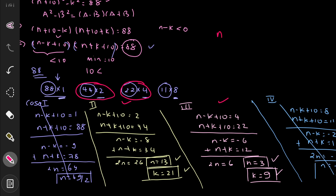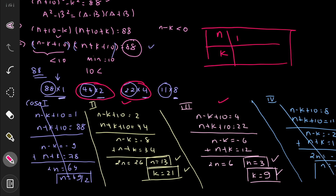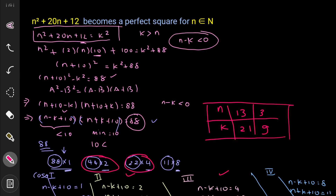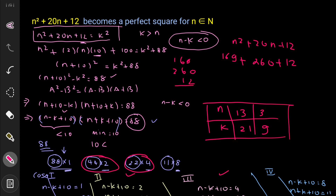So out of the four cases, valid solutions came from Case 2 and Case 3. For n = 13, k = 21, and for n = 3, k = 9. Verifying n = 13: 13² + 20×13 + 12 = 169 + 260 + 12 = 441 = 21². The first solution checks out.